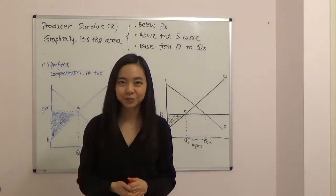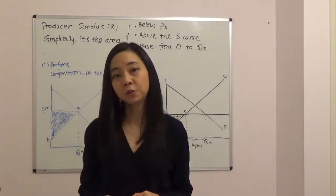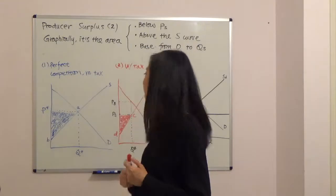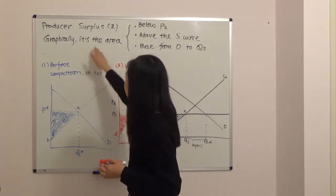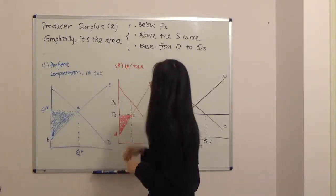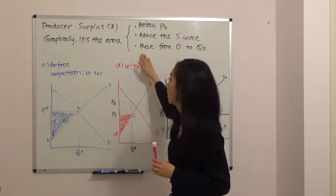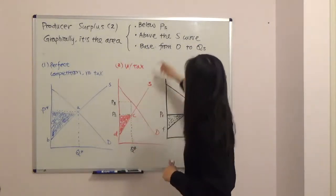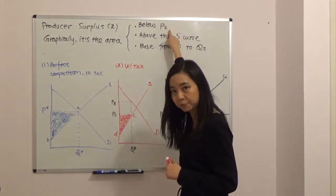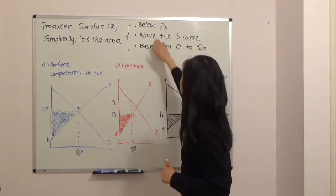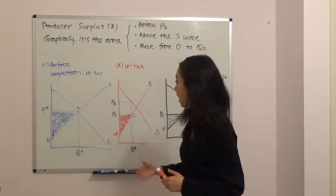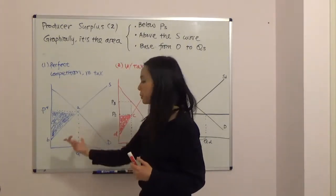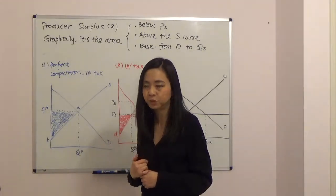Hello everyone, my name is Iris Franz and today we are going to continue to talk about producer surplus. In particular, I want to show you how to find producer surplus graphically. The tip is: graphically, the area of producer surplus is the area below the price received by the seller — I call that PS — above the supply curve.